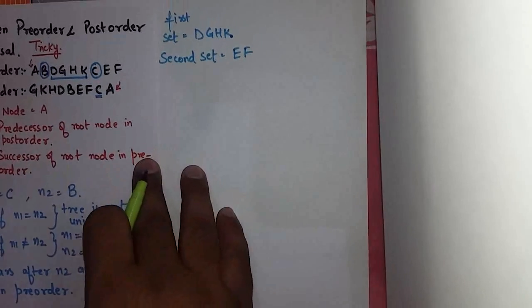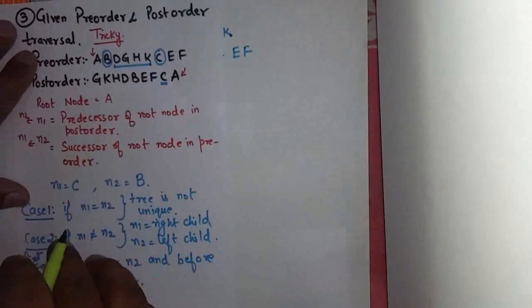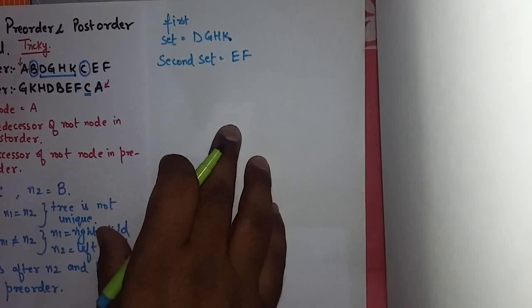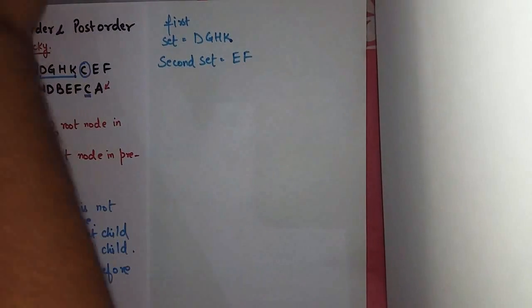Now we start drawing. What is my root node? A, so root node is A.